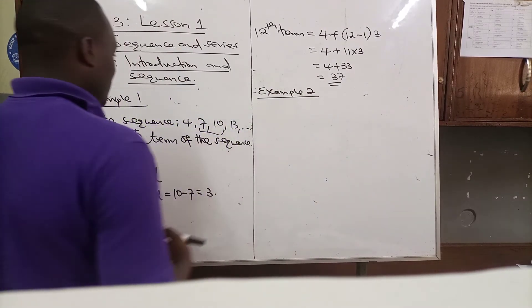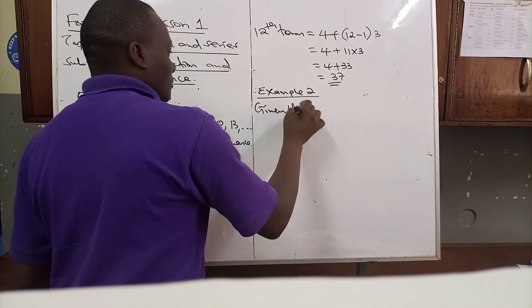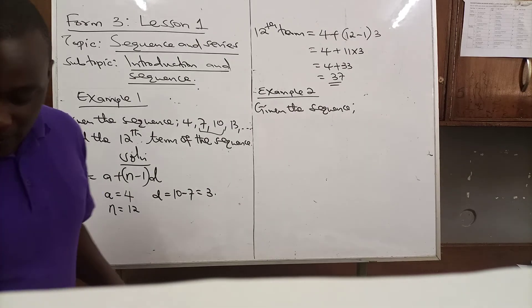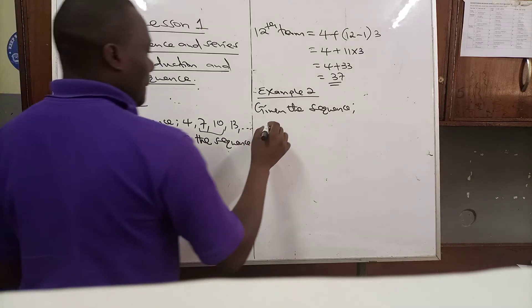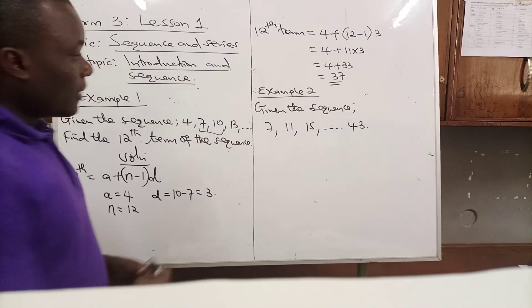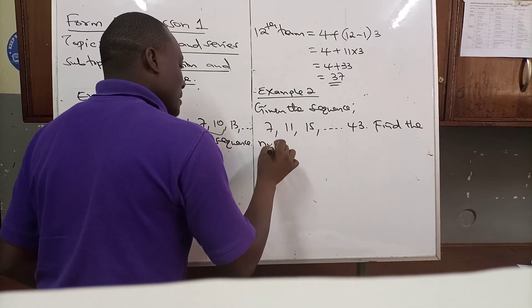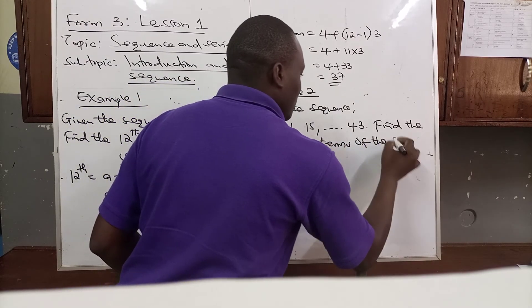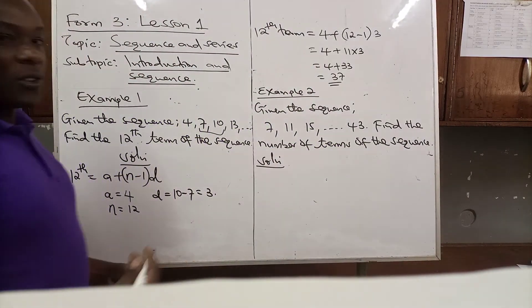Example 2: given the sequence 7, 11, 15, all the way to 43 — find the number of terms of the sequence. Solution: identify what you have been given.